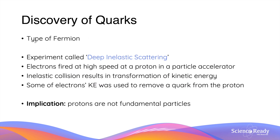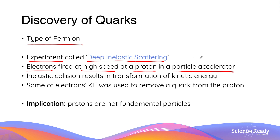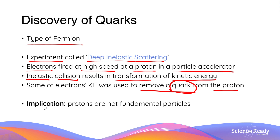Quarks are another type of fundamental particle known as fermions. They were first discovered in an experiment called deep inelastic scattering, which involved electrons being fired at high speed at a proton in a particle accelerator. This inelastic collision transformed kinetic energy — specifically, the kinetic energy of the electrons was used to remove a quark from the proton. The experiment showed that protons are not fundamental particles, as they are made of smaller particles known as quarks.